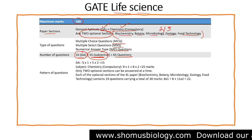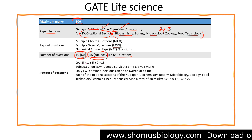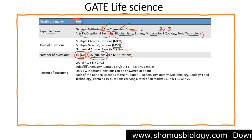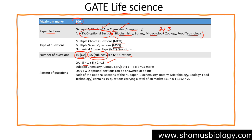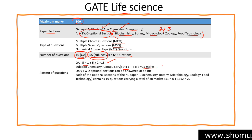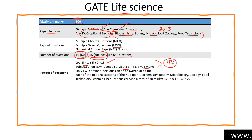For general aptitude: five questions of one mark each (5 marks) and five questions of two marks each (10 marks), totaling 15 marks. For chemistry, which is compulsory: nine questions of one mark each (9 marks) and eight questions of two marks each (16 marks), totaling 25 marks. So general aptitude and chemistry together give 40 marks.